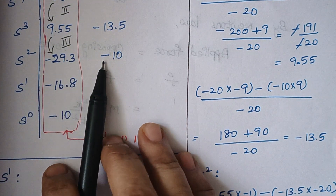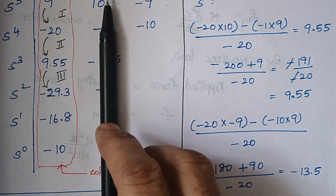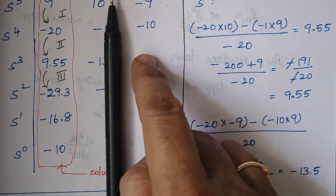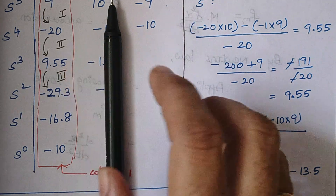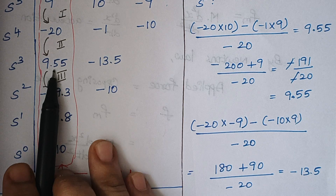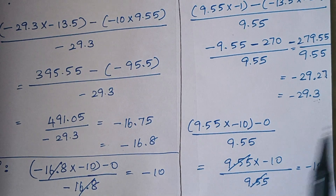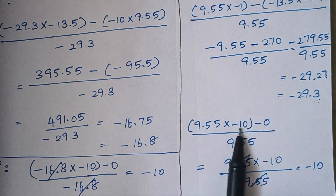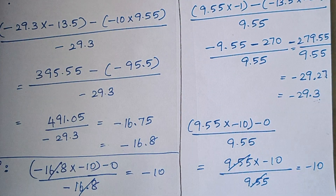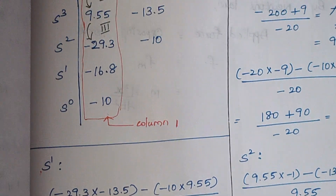For the second element of S^2, we compute: (9.55 × (−10) − 0 × (−20)) / 9.55. Since there is no element in that position, it is zero, giving (9.55 × (−10) − 0) / 9.55 = −10. So the second element of the S^2 row is −10.